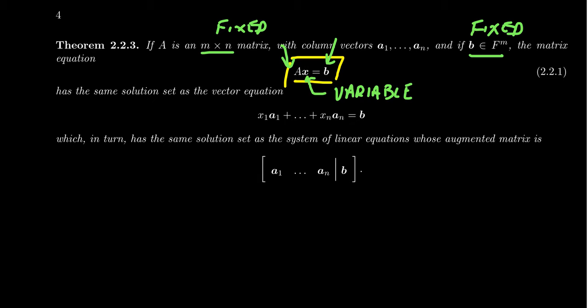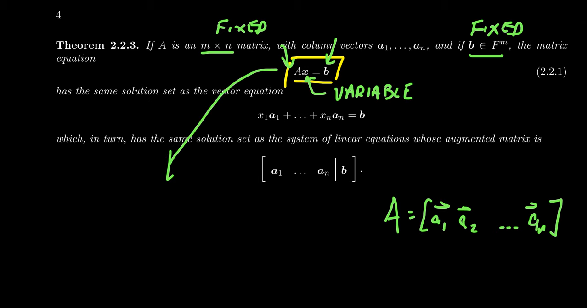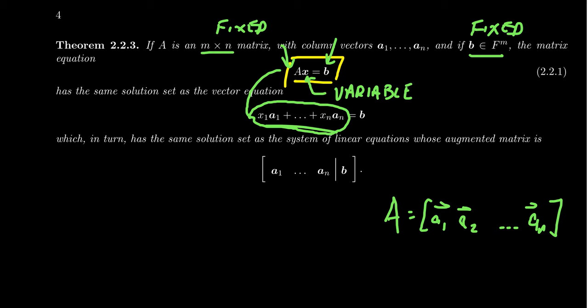Given the way that we defined matrix-vector multiplication, assuming A has its column vectors a1, a2, up to an, the matrix-vector product is exactly this linear combination, where the columns of A are just the vectors a1 up to an. And if the entries of x are x1, x2, up to xn, expanding that product gives us this linear combination.